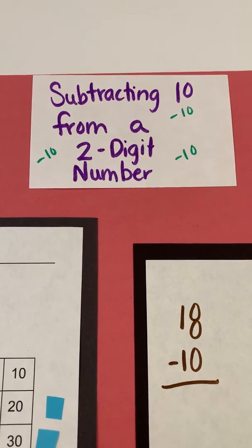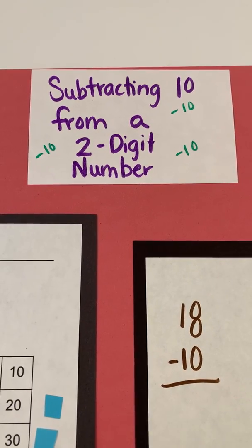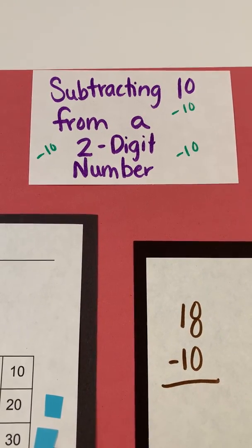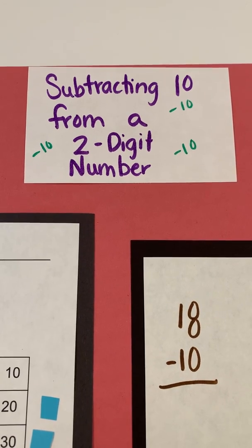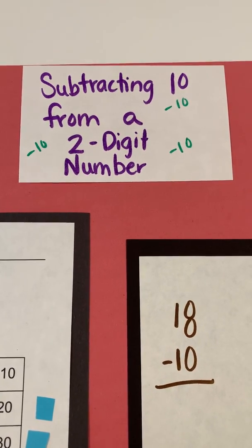This video will focus on subtracting 10 from a two-digit number. Yesterday we worked on subtracting 10 from a two-digit number using base 10 blocks, and we tried looking at the patterns. What did we notice that happened in the ones place and the tens place?